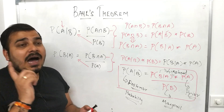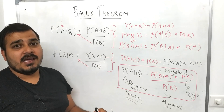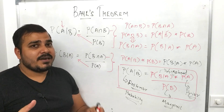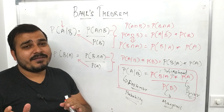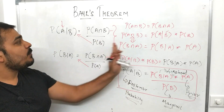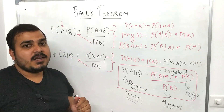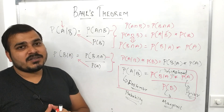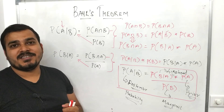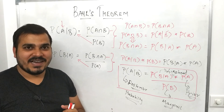In this video we understood conditional probability, independent and dependent events, and how to derive Bayes theorem using conditional probability. In the next part we'll discuss how Bayes theorem is used in a Bayes classifier. I hope you liked this video — please subscribe to the channel if you haven't already. See you in the next video, thank you!